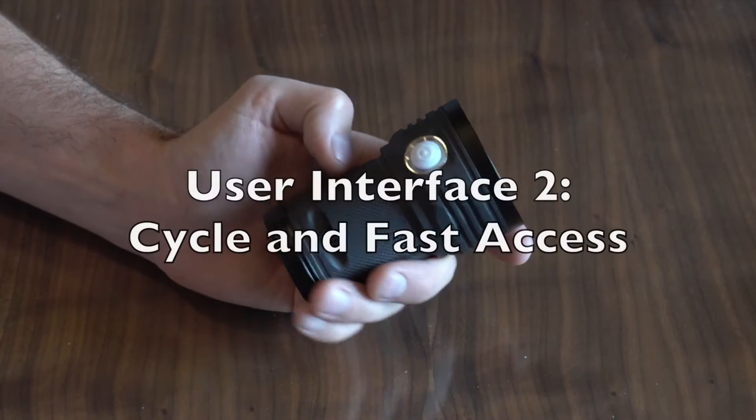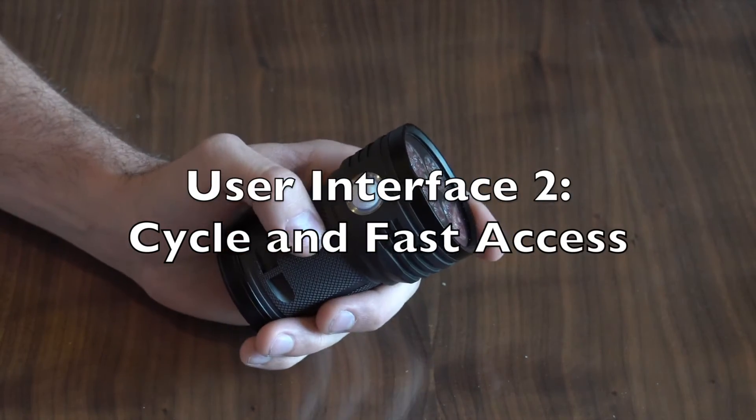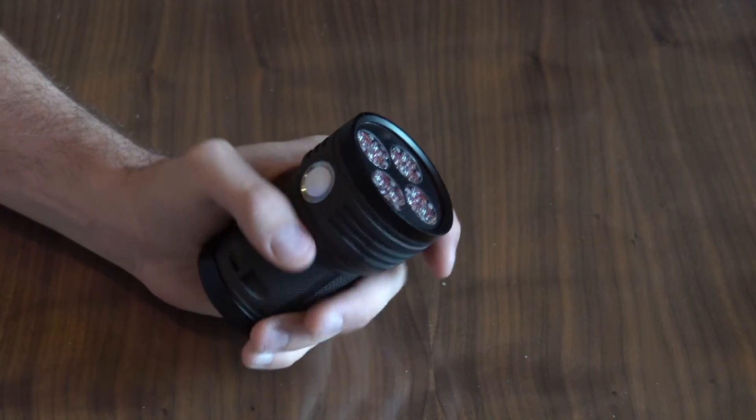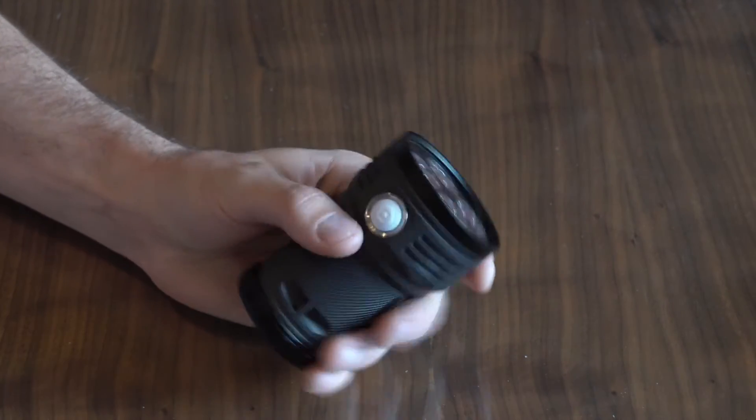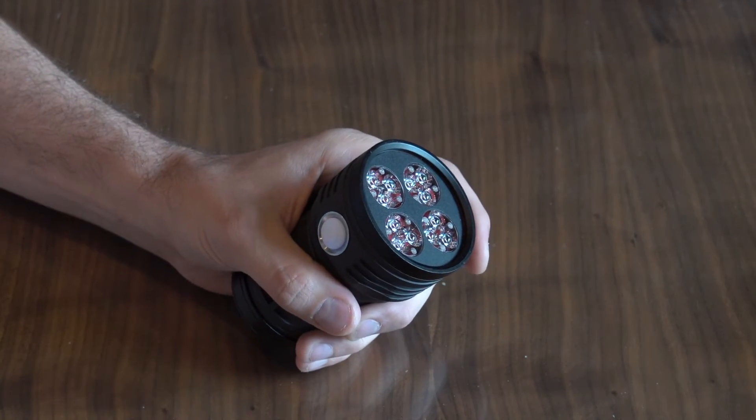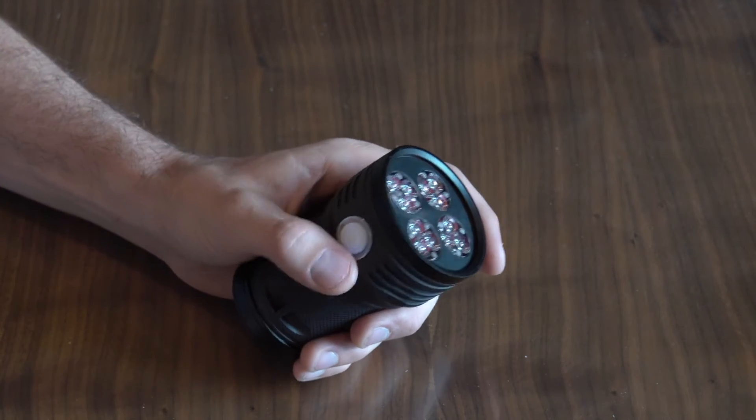The next user interface is called the cycle and fast access user interface. Now this is probably the second most popular user interface and the one that I think I like maybe the best after using the light for a little while. Now to enter this user interface, you give 10 clicks and then hold. And then the light will blink twice to show that it's entered into the second user interface.